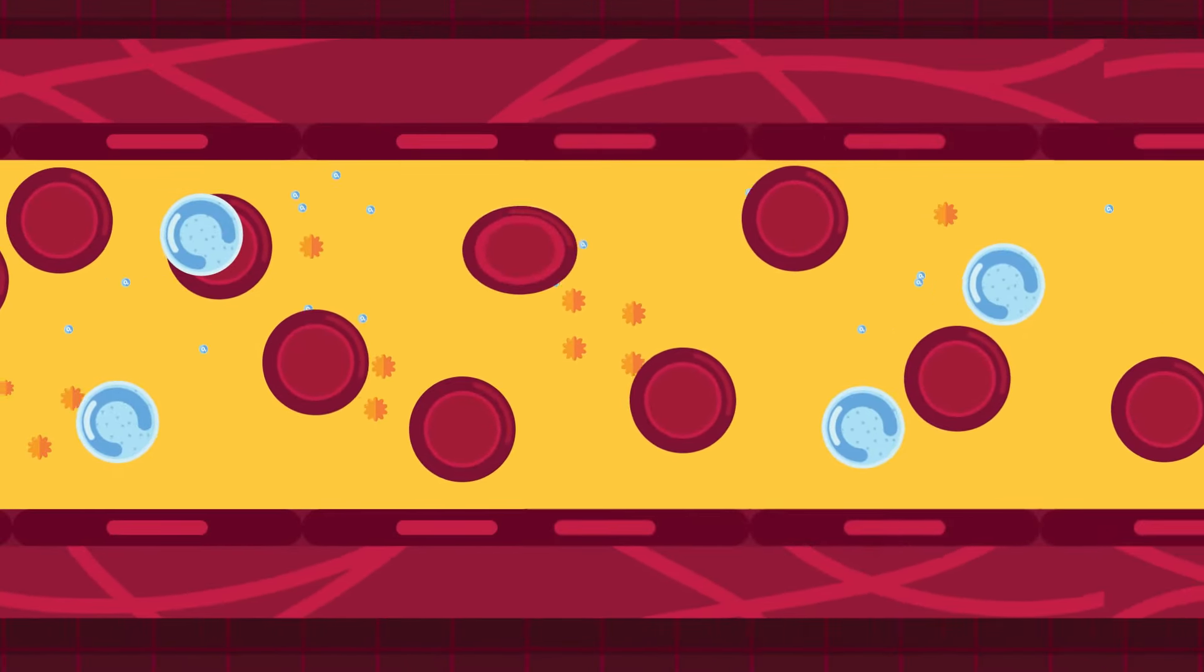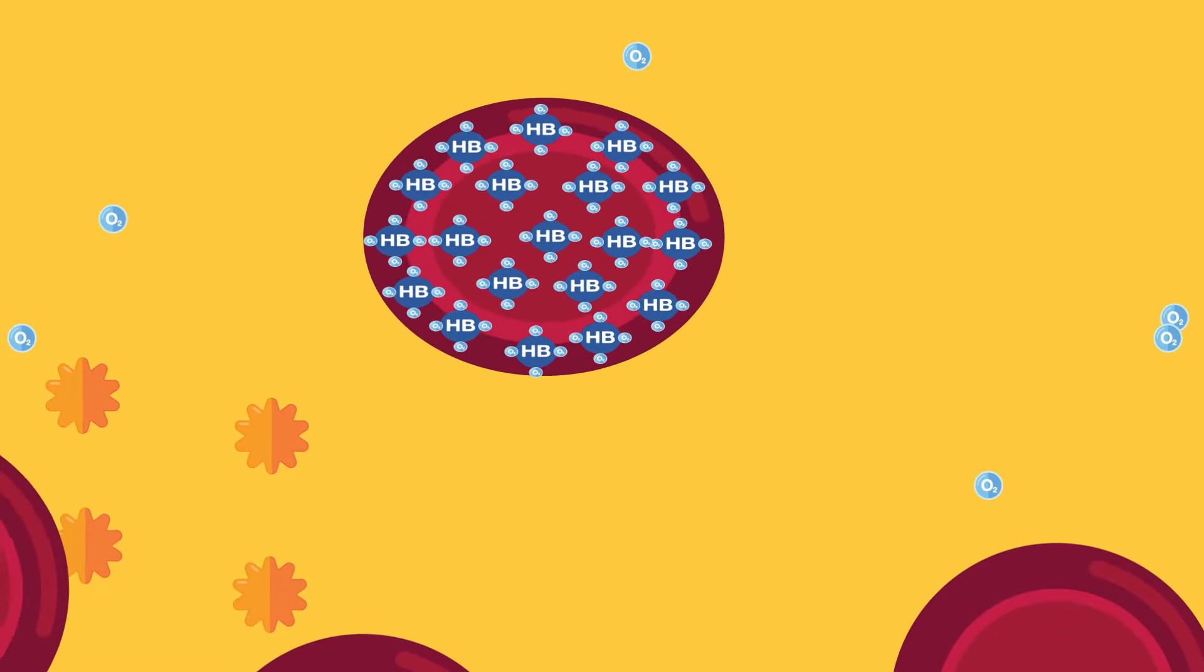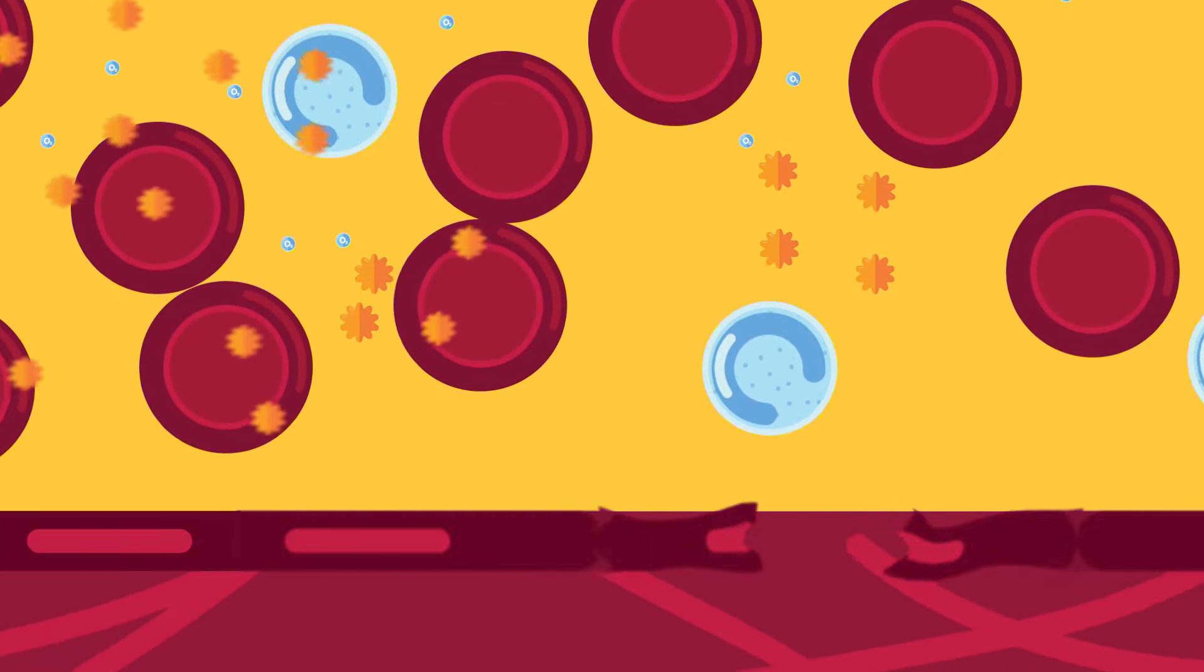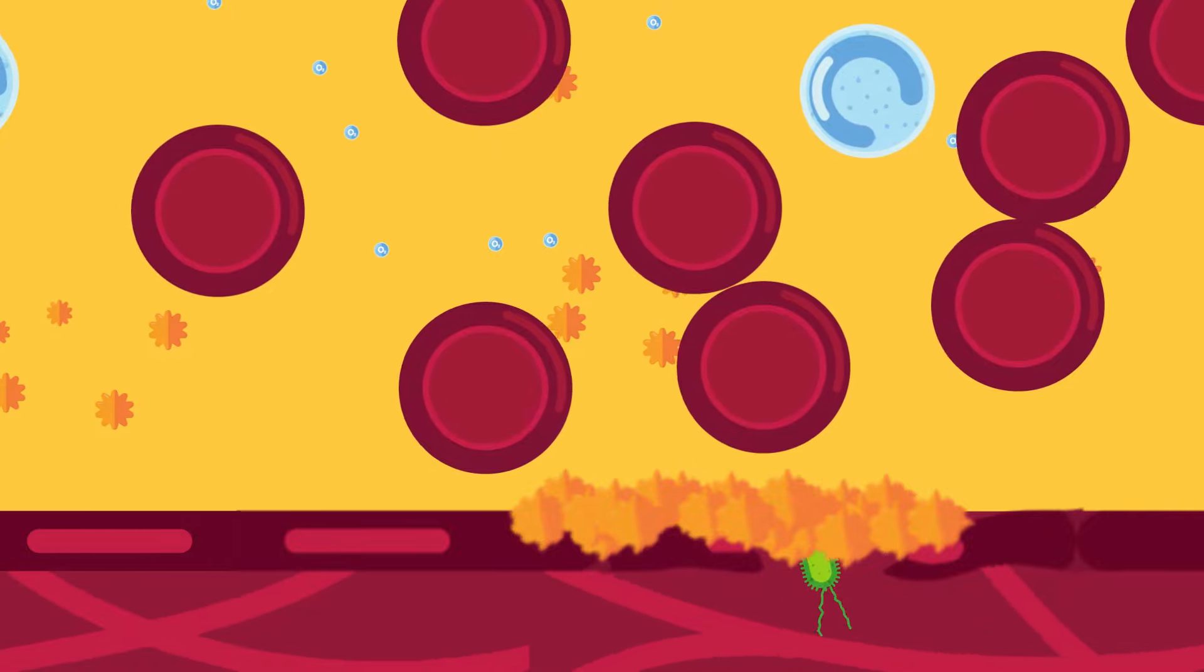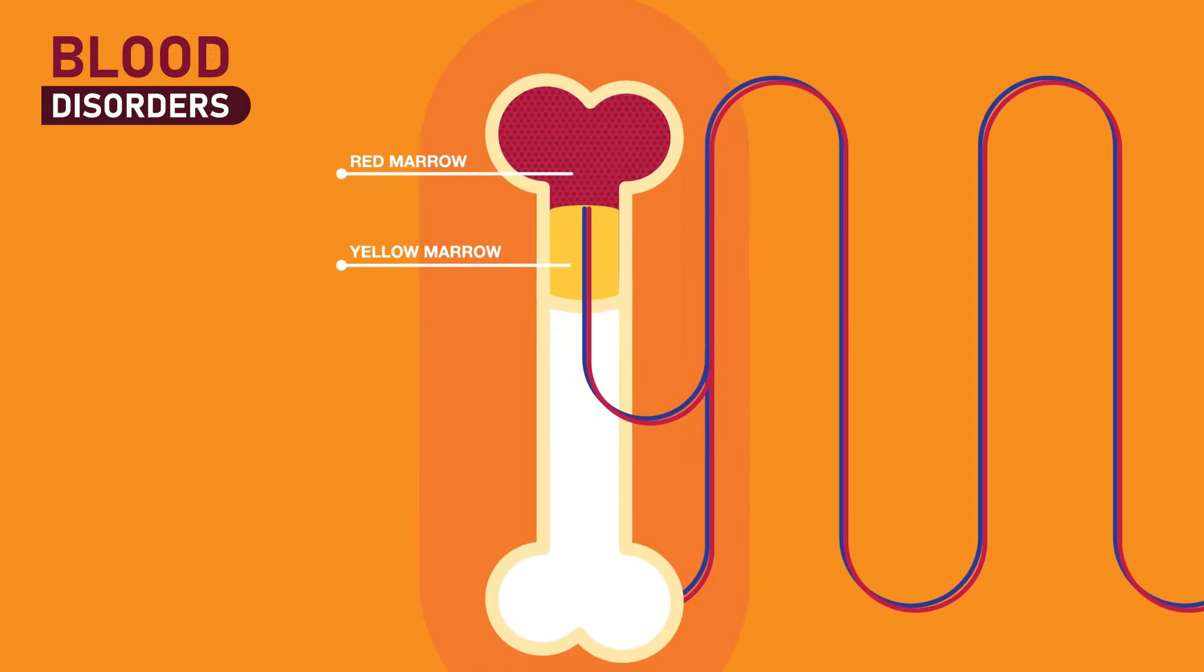Red blood cells transport oxygen to your body's organs and tissues. White blood cells help your body fight infections. Platelets are tiny molecules that stick together and build a clot on bleeding wounds. All three cell types form in the bone marrow, which is the soft tissue inside your bones.